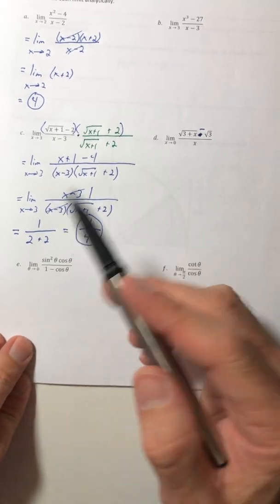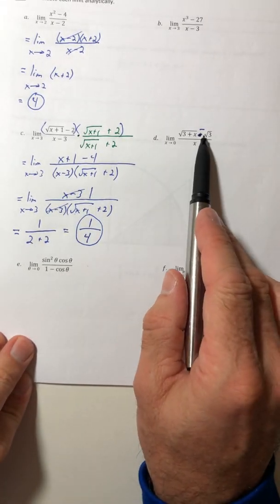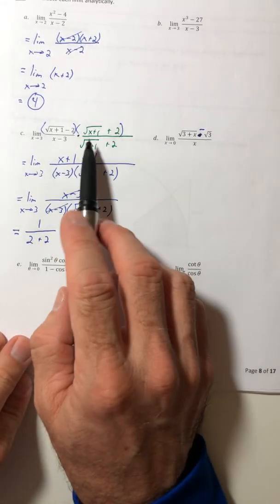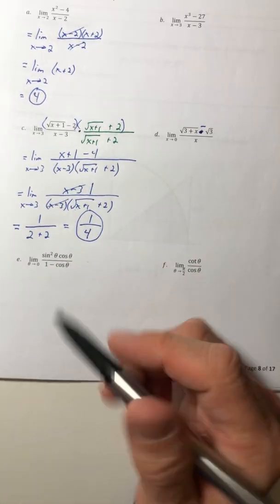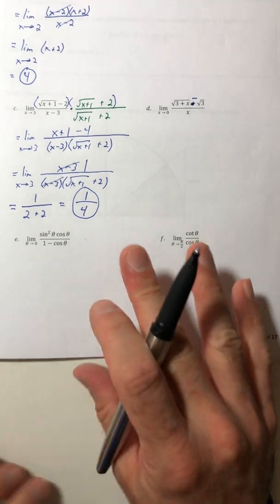Okay, part D, it's practically identical, just some of the numbers are different. So you're going to multiply by that conjugate, work all the way through it, and it comes out with an actual result.